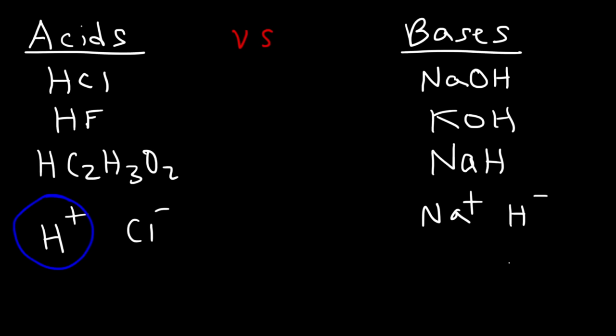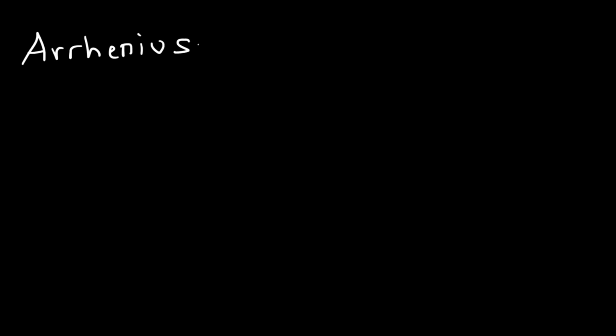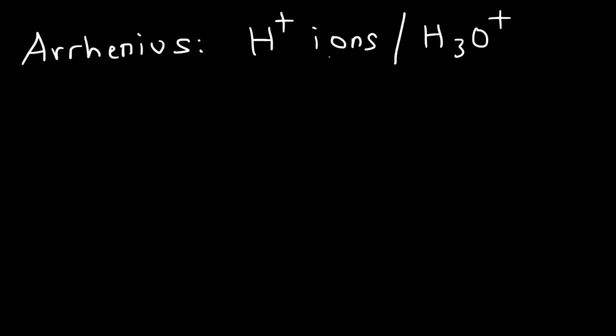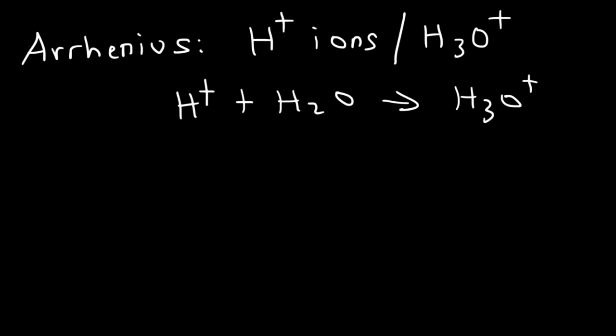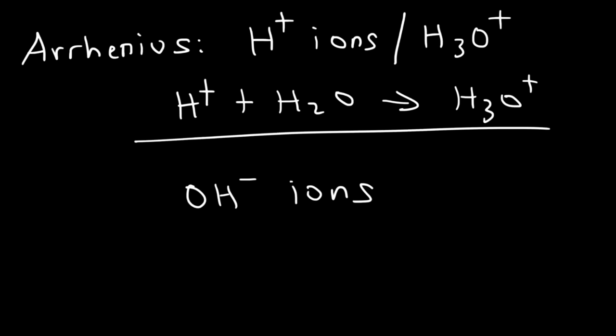You need to understand the Arrhenius definition of acids and bases. Acids are substances that release H⁺ ions into solution. Hydrogen ions in water don't really exist by themselves; they're actually bonded to water and exist as H₃O⁺. The Arrhenius definition of bases is that a base releases hydroxide ions into solution, while acids release H⁺ ions into solution.